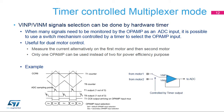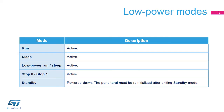The op-amp inputs can be controlled by a timer output. For example, when the current levels from two motors have to be measured alternatively, it is possible to use only one op-amp instead of two, thanks to a switch mechanism triggered by a timer output. In this way, the user can reduce power consumption and use the other op-amps for another purpose.